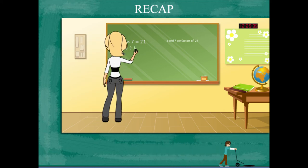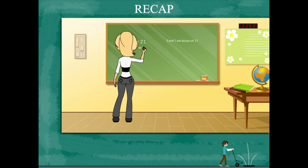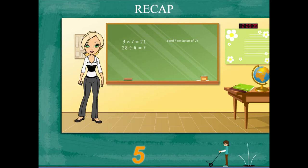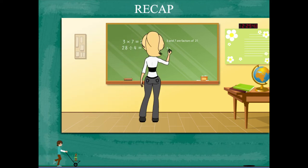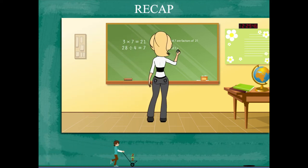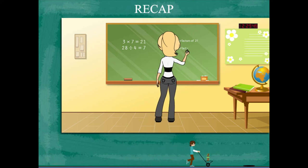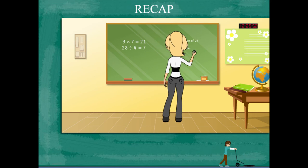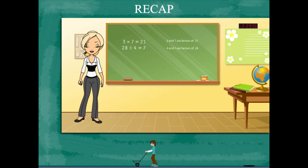She now writes 28 ÷ 4 = 7. In this case, 4 and 7 are factors of 28 because the product of the divisor and quotient is equal to the dividend.